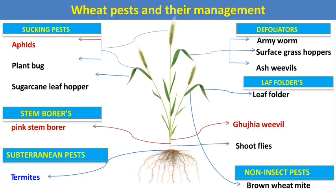These are the different pests which infest the wheat crop and cause severe yield loss. The pests are categorized on the basis of their feeding habits. The first category is sucking pests — those having piercing and sucking type mouthparts which suck the cell sap and cause indirect yield loss. The next category is stem borers, which are lepidopteran insects whose caterpillars feed on the inner content of central shoots, causing the characteristic symptom called dead heart.